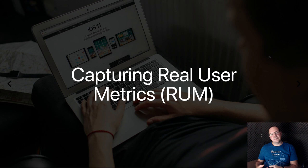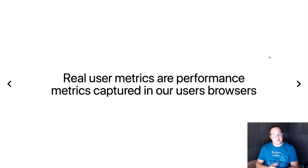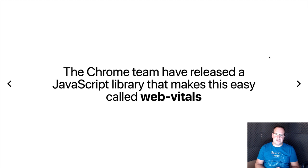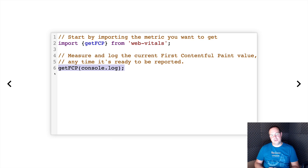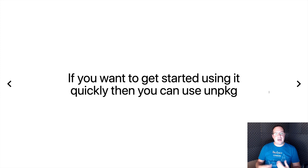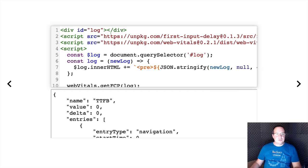Let's have a look at capturing real user metrics. Real user metrics are performance metrics captured in the browser, usually using JavaScript. Very recently the Chrome team released a JavaScript library called web vitals that makes this easy. It's about 1k. You can import it into your own JavaScript with an import statement from the node module and then log it however you want — I'm just using console.log here, but you might have a logger that sends it to a server. I don't want to have to build a full setup for these demos, so I'm going to use something called unpkg, which allows me to load the library from a CDN. We're loading two packages: the first input delay polyfill to support more browsers, and the web vitals CDN.